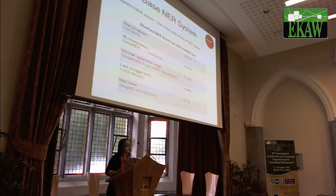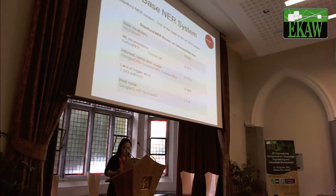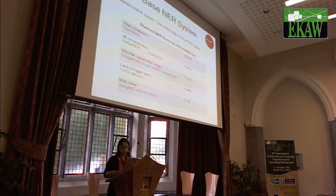Around 10% of errors are caused by the lack of trigger words. For example, when we have '1.5 million' without a dollar sign, it was all missed by the NER system. Finally, there are a number of web noises such as spelling errors, symbols, or excessive abbreviations. For example, 'Google' was misclassified as a non-named entity because it was just next to a plus sign.